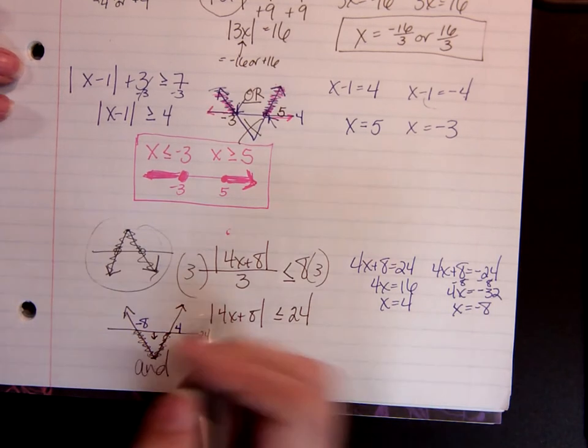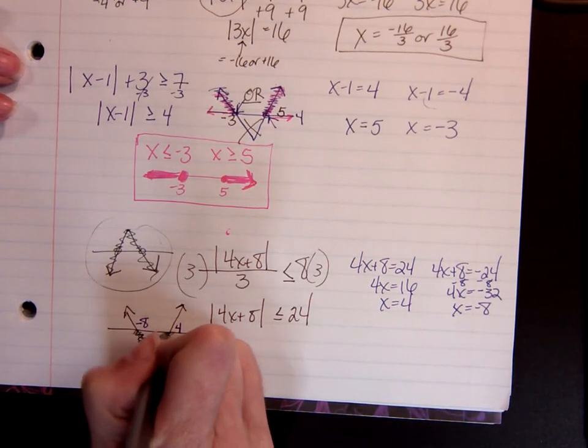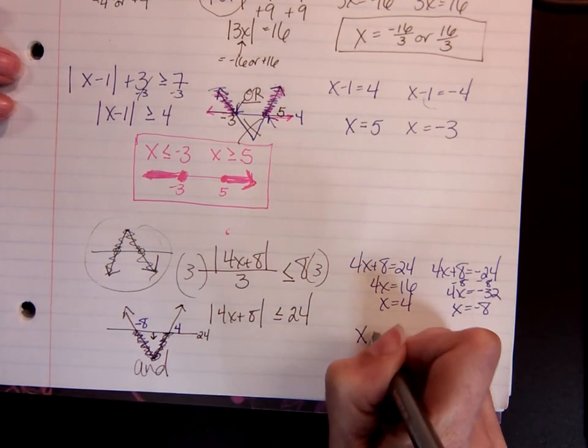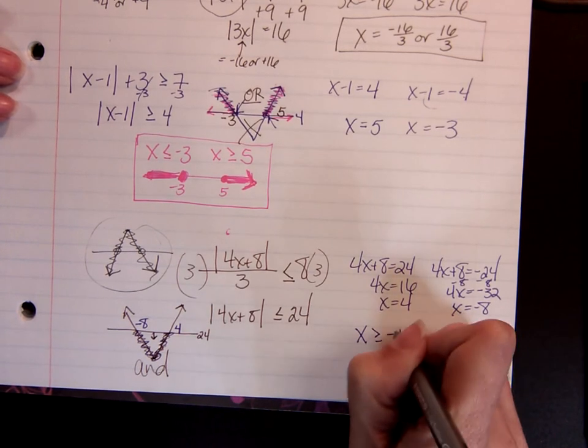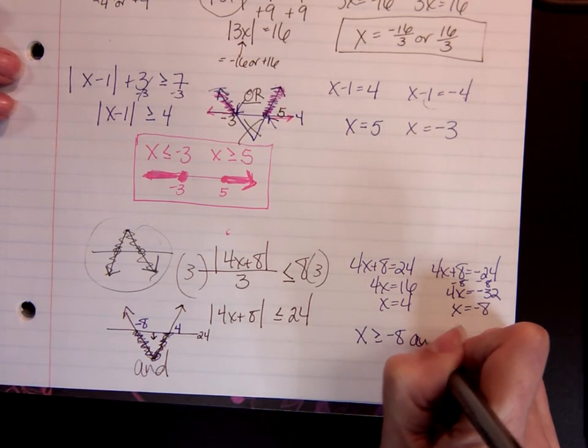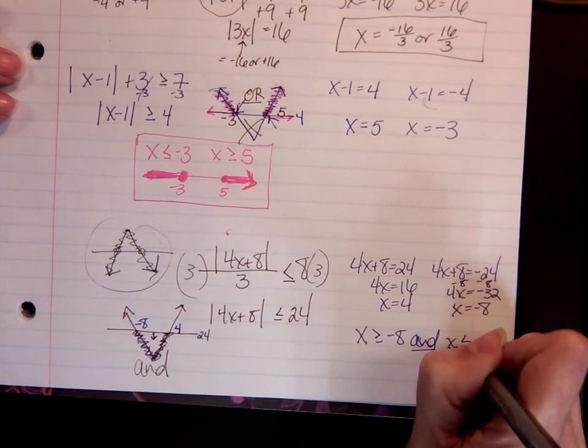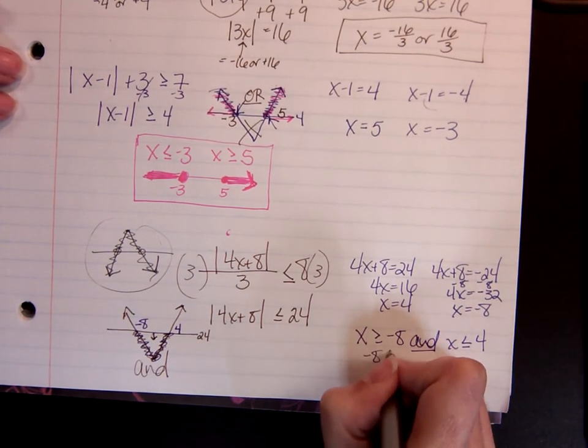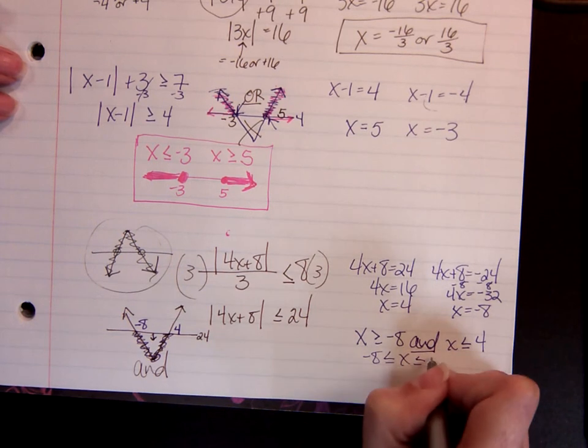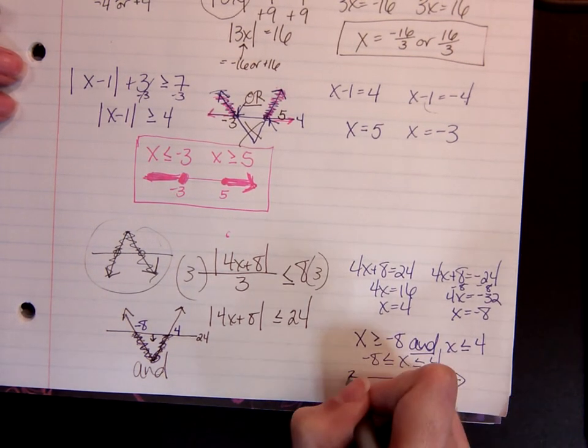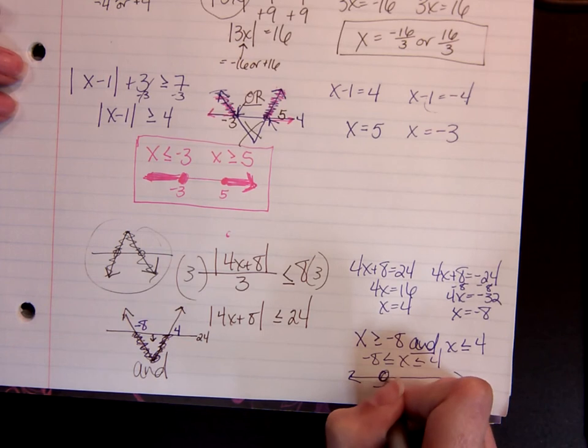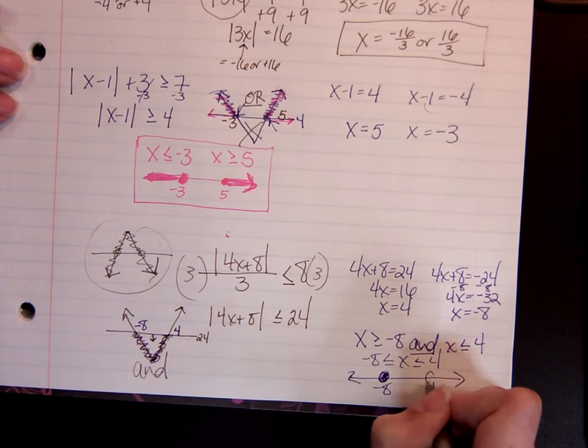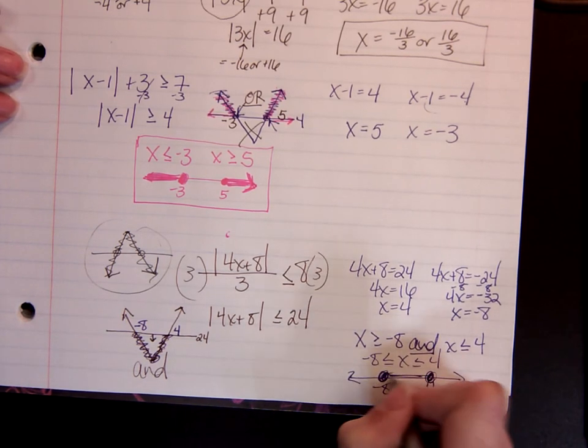And then I'm just going to connect them together with an equality. So I know x should be greater than or equal to negative 8. And x should be less than or equal to 4. Which I can write negative 8 less or equal to x less or equal to 4. And on my number line, it's the same thing. Negative 8, 4. And then we just connect those together.